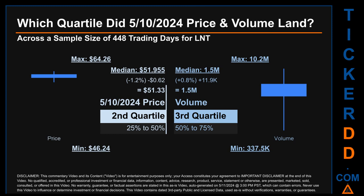Hello, my name is Maria. Which quartile did the May 10th, 2024 price and volume land in, across a sample size of 448 trading days? The maximum end-of-day price for LNT was $64.26 while the minimum was $46.24. Within that range, the May 10th price of $51.33 landed within the second quartile, putting it within the 25 to 50 percent range of all sampled end-of-day prices.